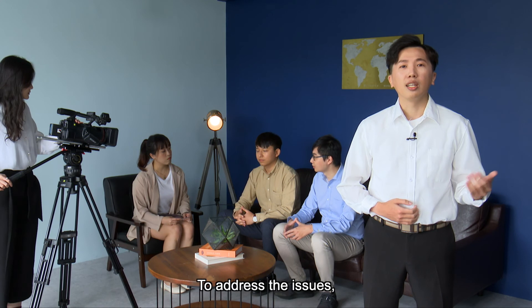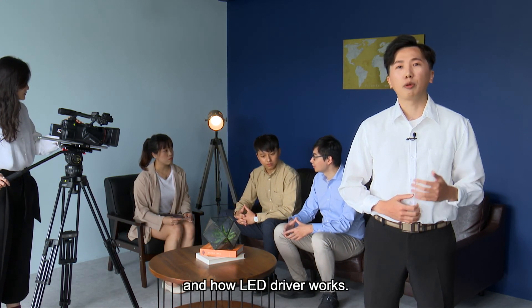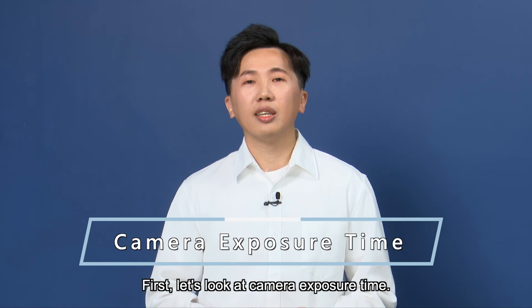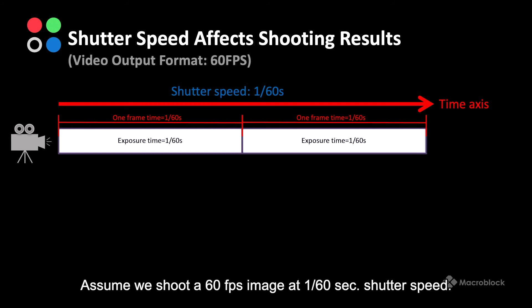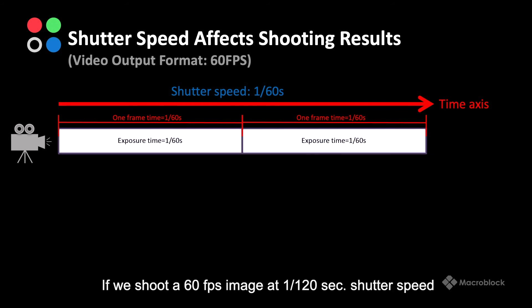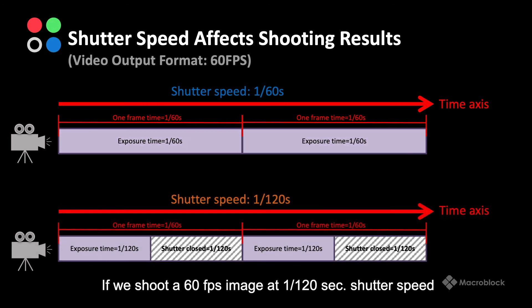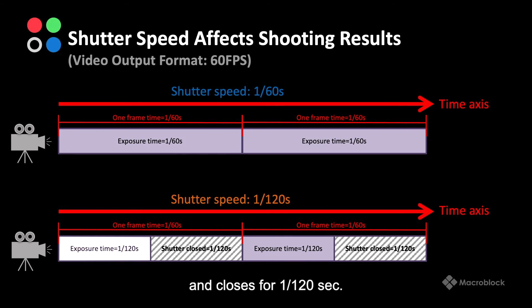To address the issues, we must first understand camera exposure time and how LED driver works. Let's look at camera exposure time. Assume we shoot a 60fps image at 1/60 second shutter speed. This is what it looks like along the time axis. The shutter opens for 1/120th second and closes for 1/120th second.